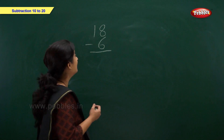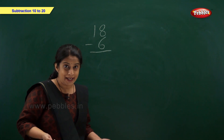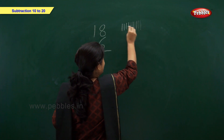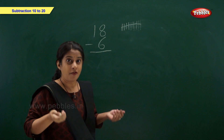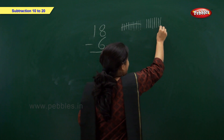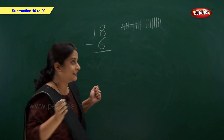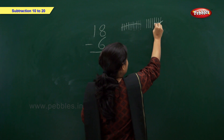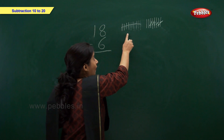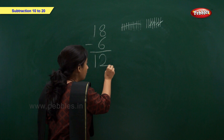Let's solve this example. Now we have 18 minus 6. 18 means 1 ten and 8 ones. Let's draw: 1, 2, 3, 4, 5, 6, 7, 8, 9, 10 — this is our bundle of 10 or 1 ten. Then 1, 2, 3, 4, 5, 6, 7, 8 — that's 8 ones. Now let's take away or subtract 6 from 18: 1, 2, 3, 4, 5, 6. Now how many remaining? We have 1 ten, and how many ones? 1, 2 — that's 2 ones.